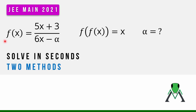Hello everyone, welcome back to my channel Mathematics. In this video we are going to discuss a question involving functions. There is a function f(x) given as (5x + 3) / (6x - α), and f(f(x)) is equal to x. We have to find the value of α, which is a constant missing in the given function f(x).